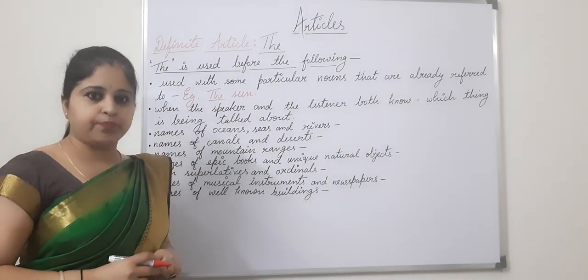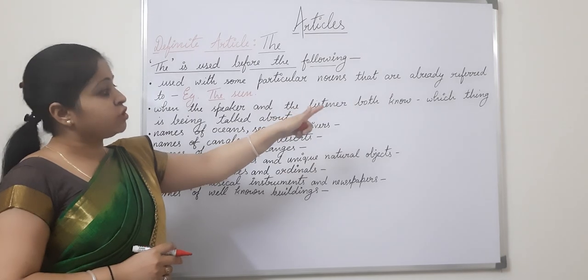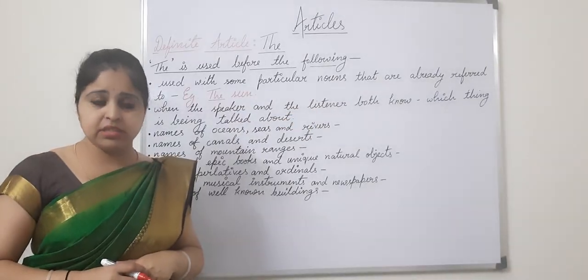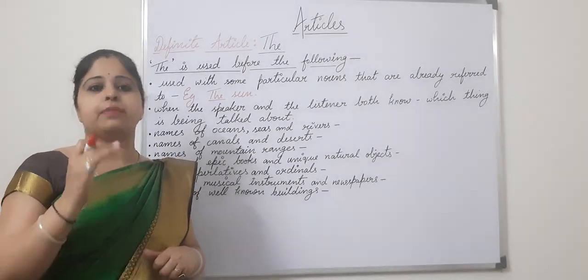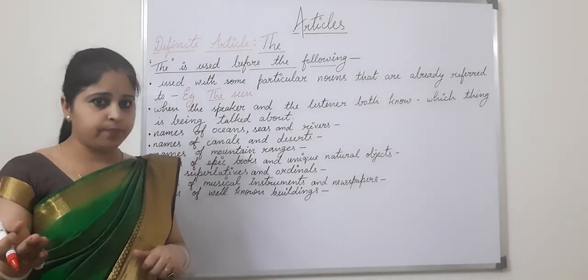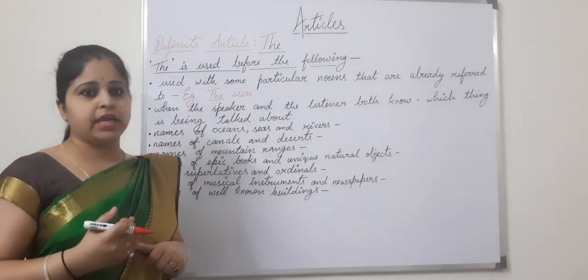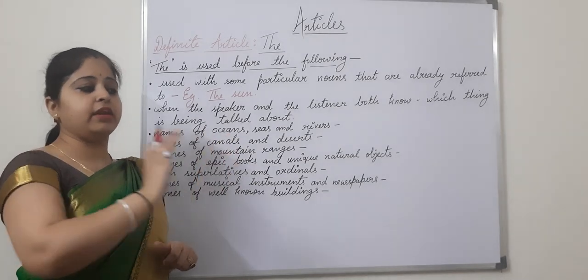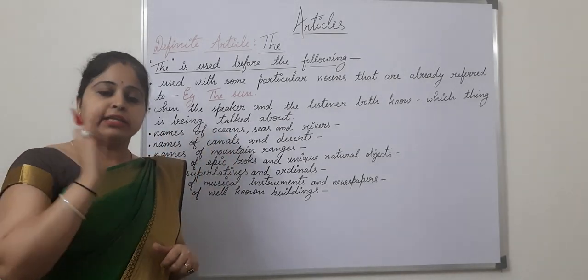The first point says this article is used with some particular nouns that are already referred to — when objects are themselves clearly indicated. Such as 'the sun' — clearly indicated. In such cases, we will be using 'the'. Next: when the speaker and the listener both know which thing is being talked about.